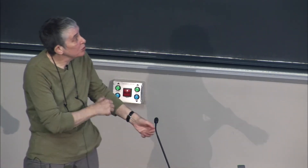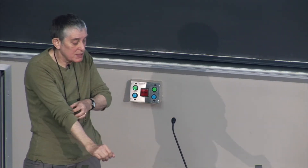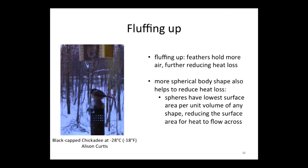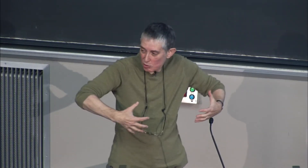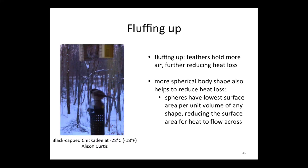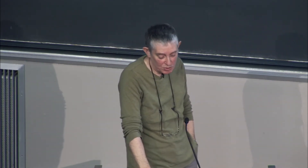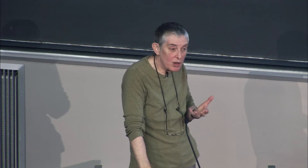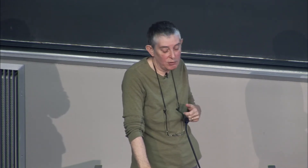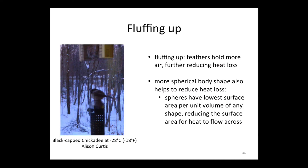Birds also reduce heat loss by fluffing up. Here's a chickadee from a friend's feeder in northern Ontario — its body is almost spherical from fluffing out its feathers. When they do that, they trap more air in their feathers and make themselves more spherical. A sphere has the lowest surface area per unit volume, so there's less surface area for heat to flow out of. So the thermal conductivity of feathers and the insulation value of down is controlled in part by the structure of the down.